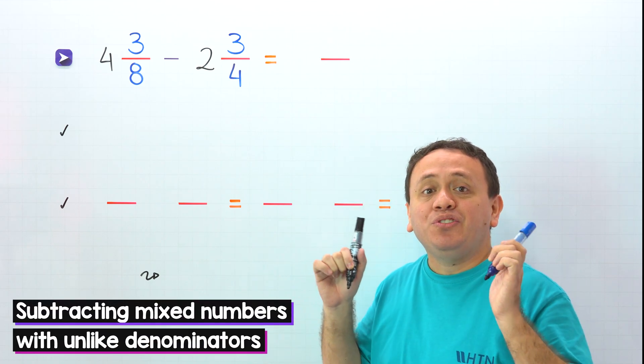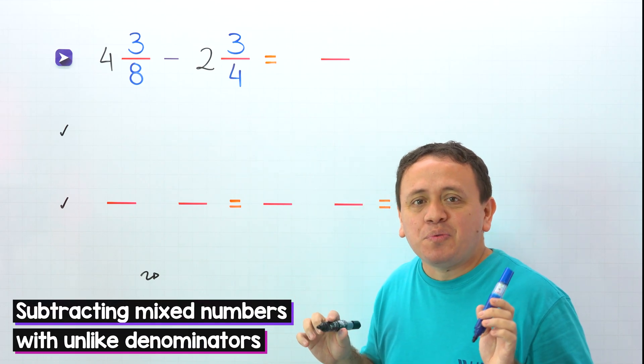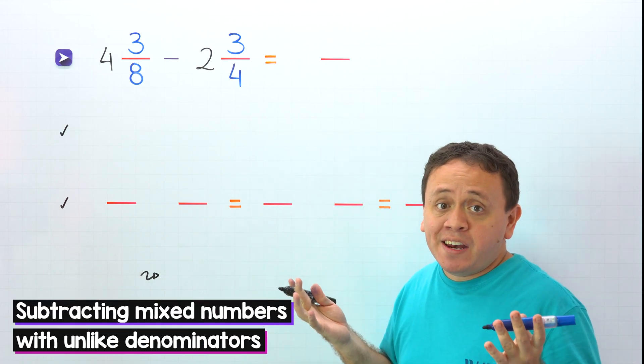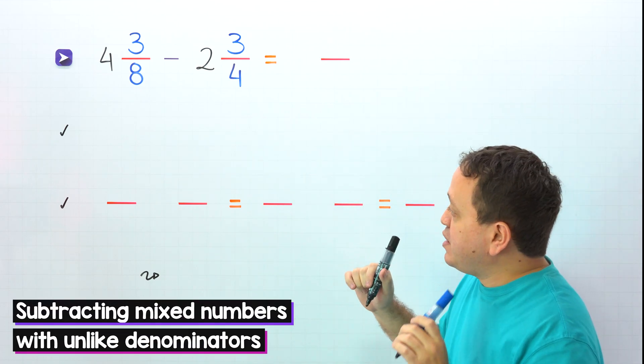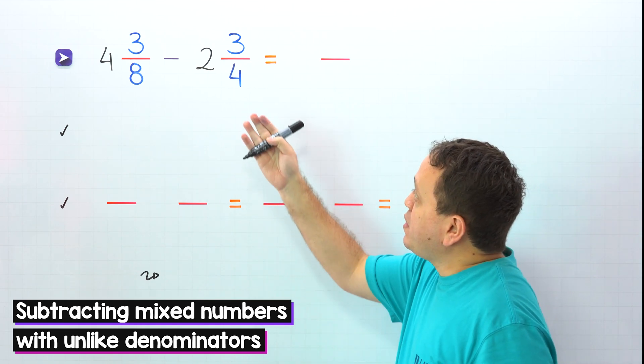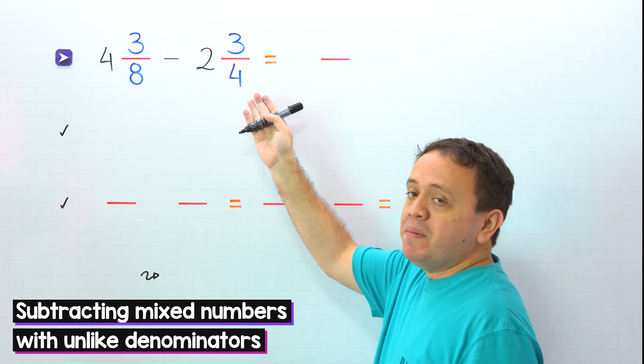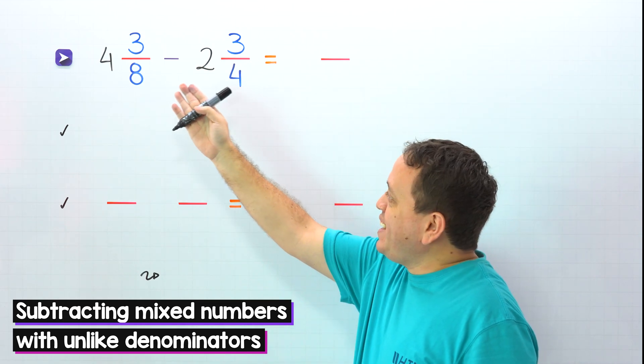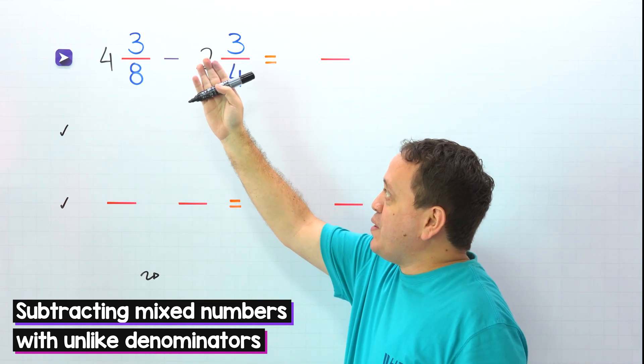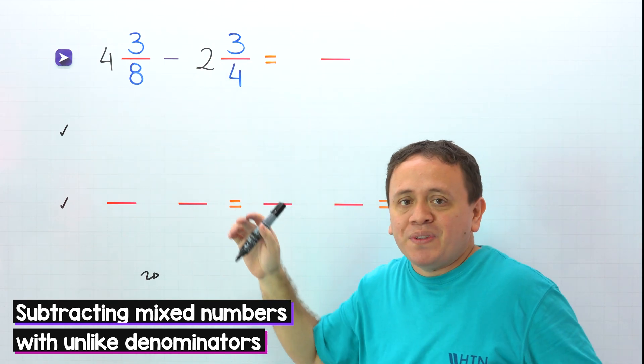Today we're going to take a look at how to subtract mixed numbers with unlike denominators. This is a special case where the fraction of the second mixed number is greater than the fraction of the first mixed number.